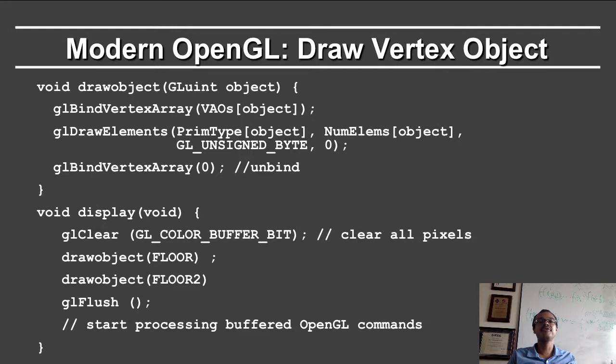After we have done all of this setup to initialize the object, drawing of the actual vertex object is surprisingly simple. The drawObject command just takes in the integer value corresponding to the object. You bind the vertex array for that object, and you draw the elements corresponding where you are given the primitive type for the object, the number of elements for that object. GL_UNSIGNED_BYTE tells you that the elements are just represented by an unsigned character, which is the indices specifying the object. Thereafter, you unbind.